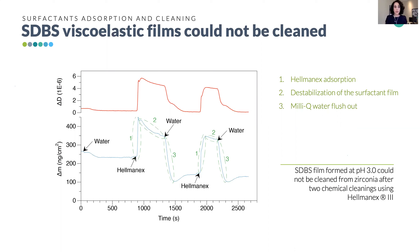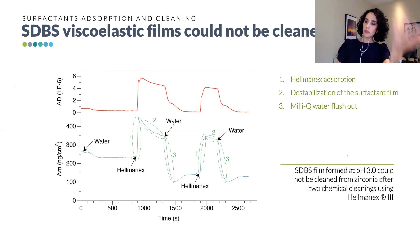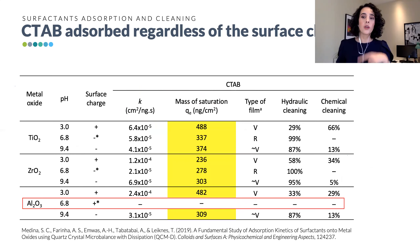These insights into how chemical agents interact with and remove adsorbed surfactant films are crucial for understanding the chemical cleaning mechanisms of ceramic membranes. Moving to CTAB, the cationic surfactant, we found it adsorbed to all metal oxides regardless of pH conditions — with the exception of alumina at neutral pH. This finding suggests that electrostatic repulsions between positive CTAB and a positively charged surface were not enough to prevent adsorption, and therefore other supramolecular interactions are occurring. The type of film CTAB formed was most often quasi-viscoelastic or viscoelastic.